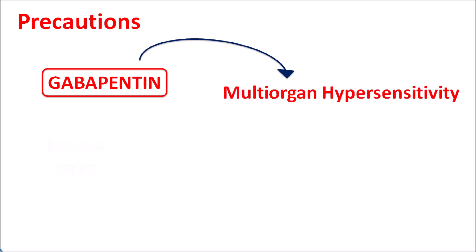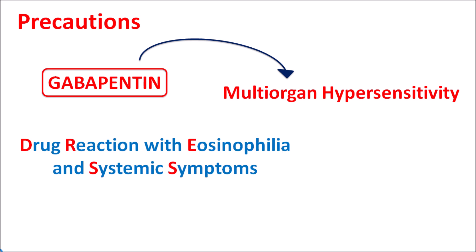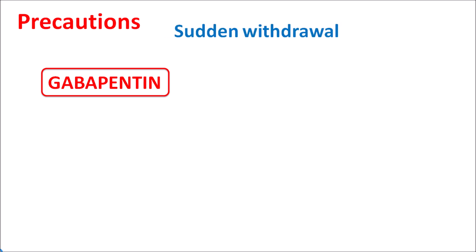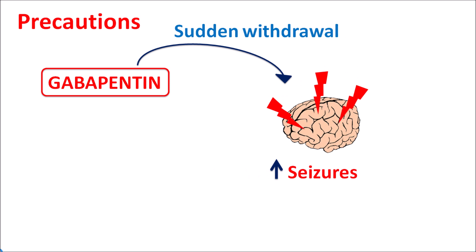This drug can also produce multi-organ hypersensitivity, specifically DRESS — Drug Reaction with Eosinophilia and Systemic Symptoms. This results in fever, skin rashes, and inflammation of various organs including hepatitis, nephritis, and lymph node swelling. Although rare, care should be taken to check for symptoms of multi-organ hypersensitivity. Additionally, since gabapentin is an anticonvulsant, sudden withdrawal can increase the risk of seizures — the dose must be tapered slowly.